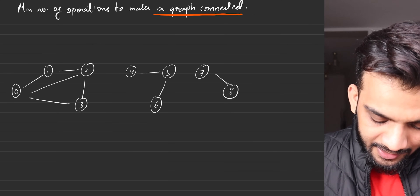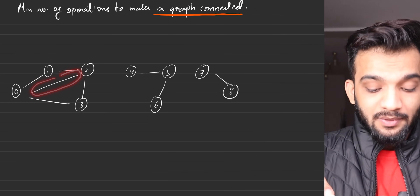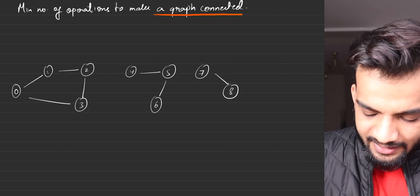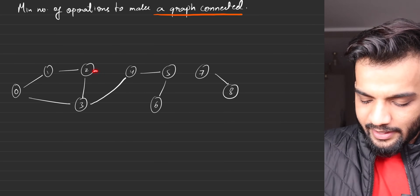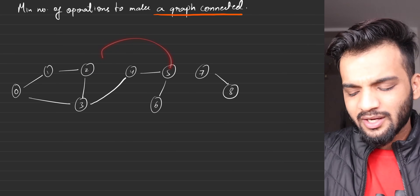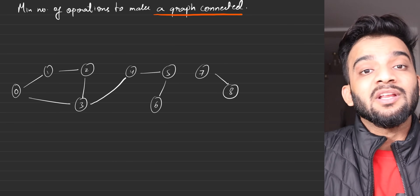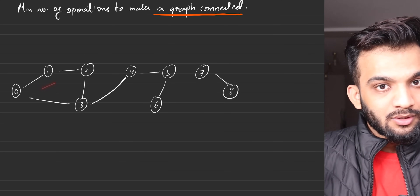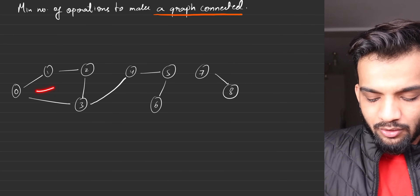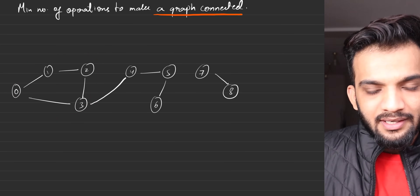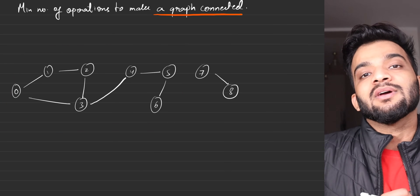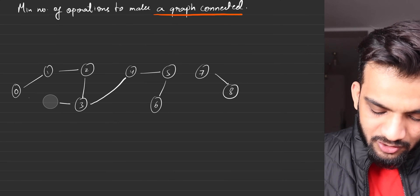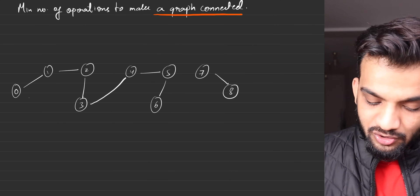For example, if you see this particular component — I remove this edge. I'll take this edge and connect three and four. You can connect two and six, two and five — you can connect it anywhere. But in order to use an edge you have to take it out from somewhere. I took it out, and it's still a component, and it helped me get connected to this particular component.